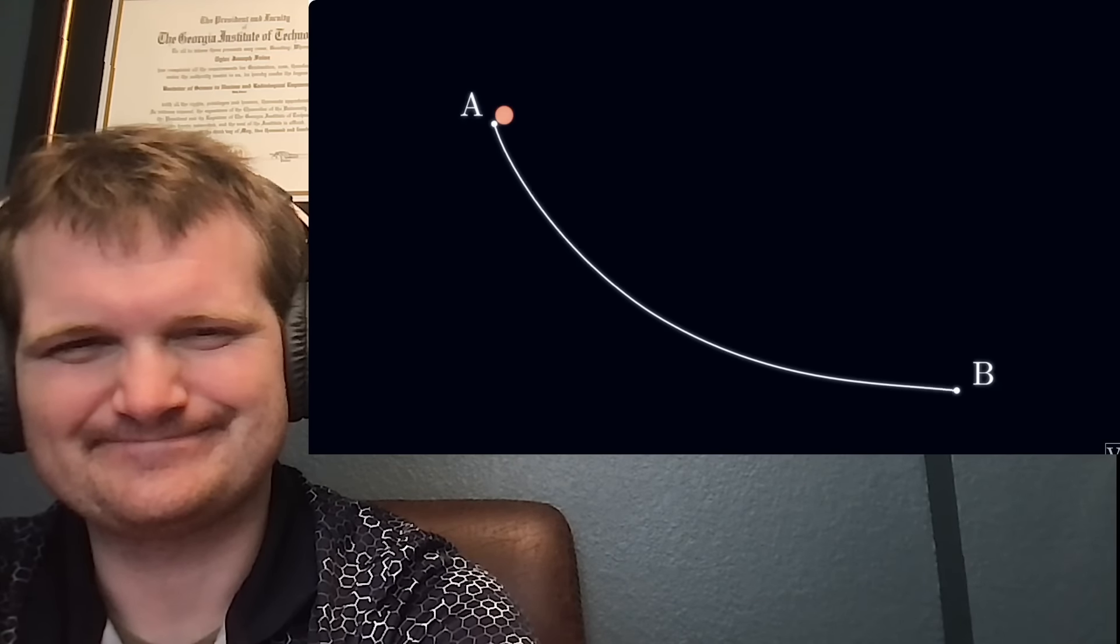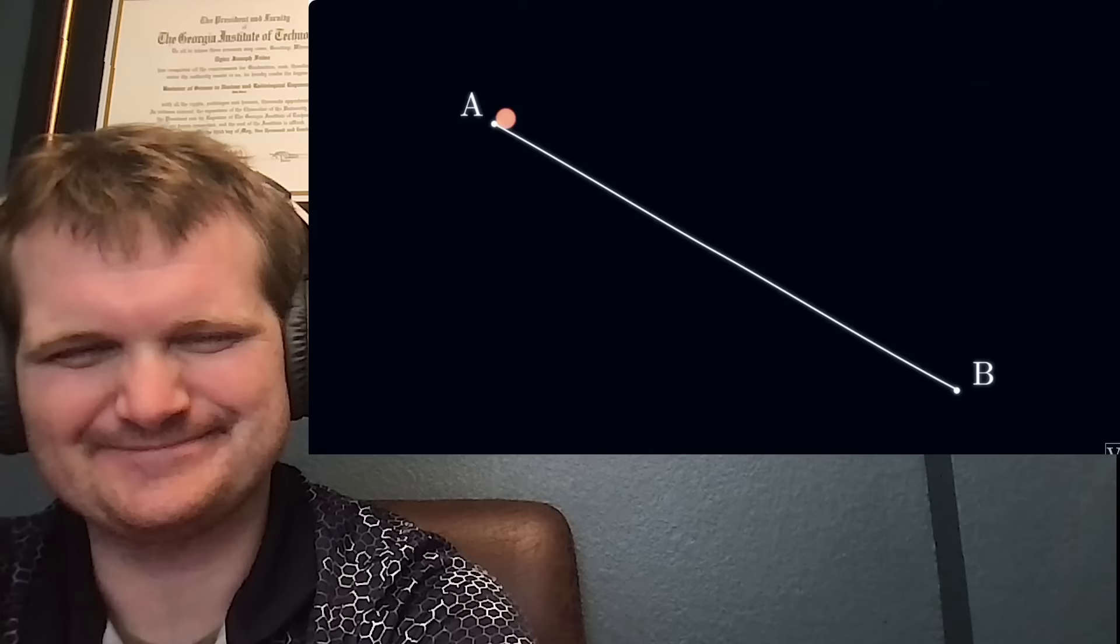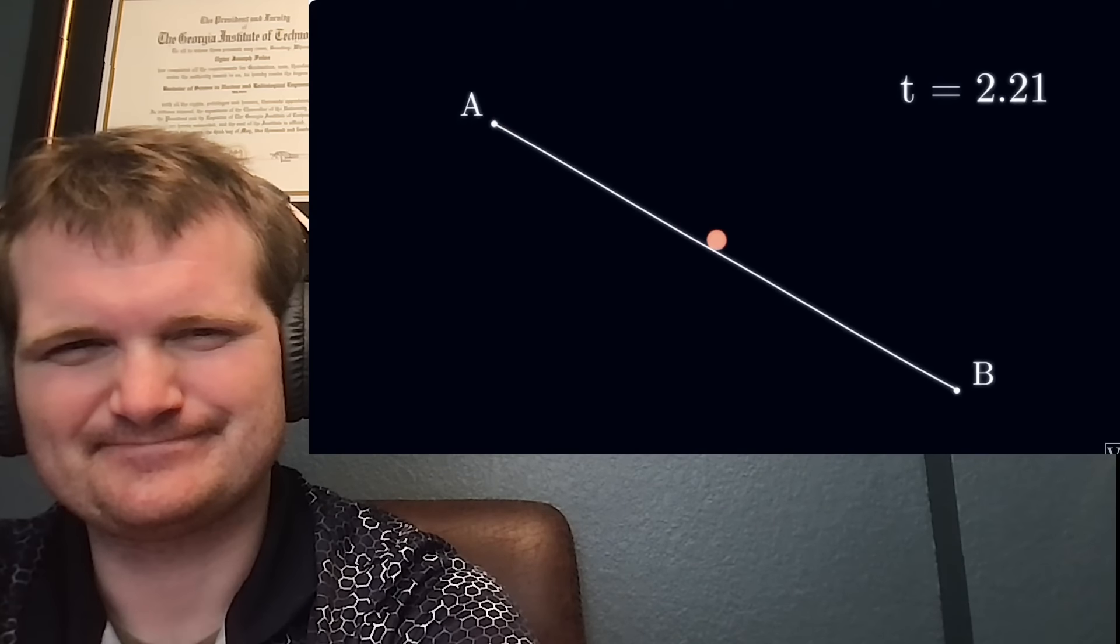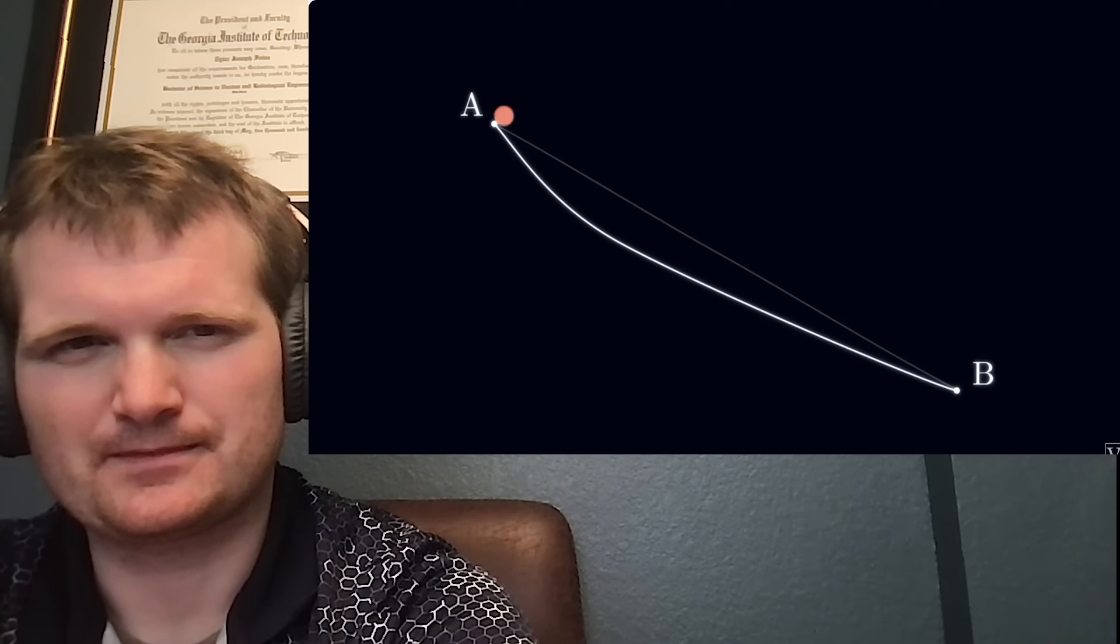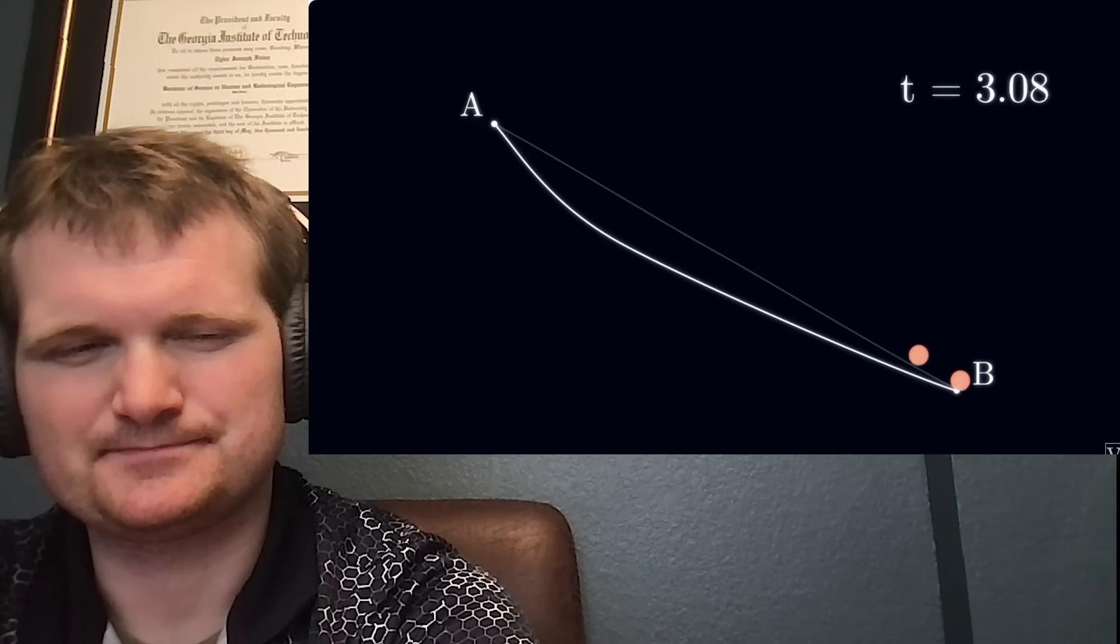This is known as the problem of fastest descent. You know, common sense, you might say, take the shortest path. Straight line from A to B. But if you bend the ramp down a bit at the beginning, well, the mass accelerates to a higher speed earlier. So even though it travels slightly farther, it travels faster and beats the straight ramp.